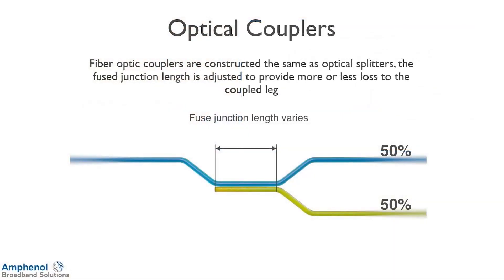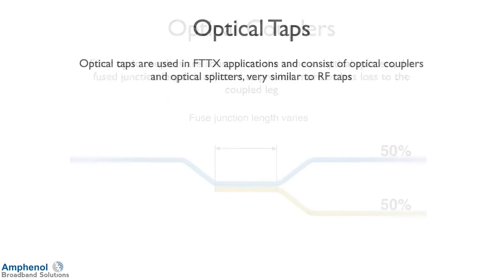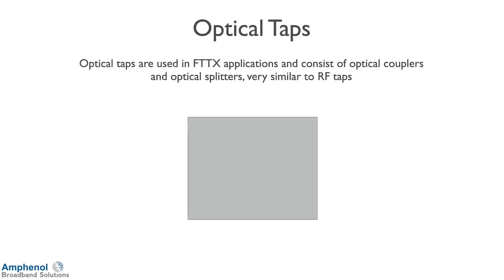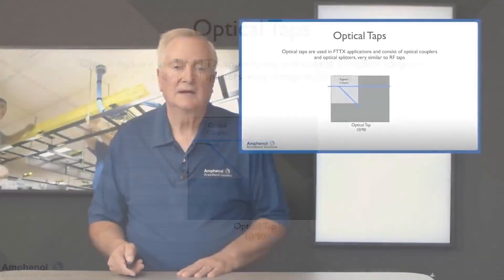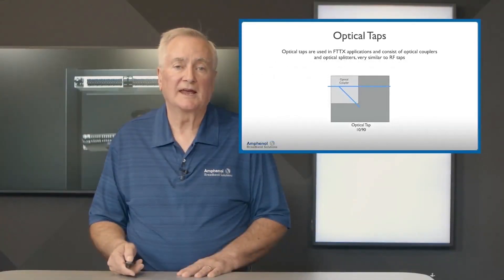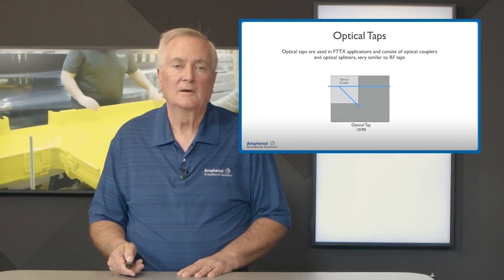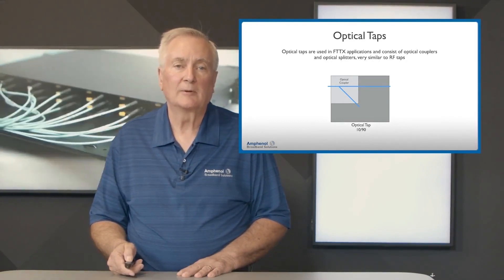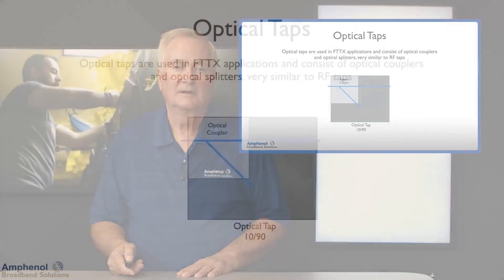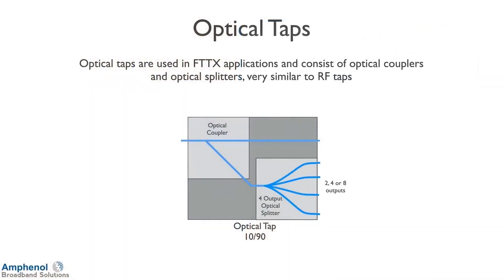Where these optical couplers come into play is in optical taps — very similar to what we do with RF taps. We take an optical coupler; in this example I'm using a 10-90 optical coupler. We take one leg going from the input to the output, and then we have one down leg. The down leg feeds a four-way splitter — or it could be a 2 or an 8. With the 90-10 coupler, we have 100% input power, 90% on the output, and 10% on the coupler down leg.